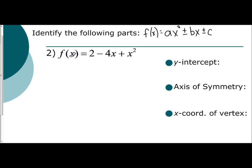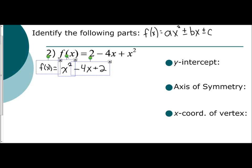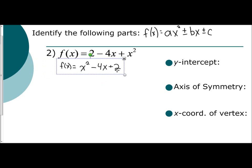The first thing I want to do is rewrite this in standard form. Remember, addition is commutative, so as long as we use the operations in front of the terms as their signs, we can move their positions. The quadratic term comes first: positive x². Next, the linear term: minus 4x. Then the constant: plus 2. This gives us f(x) = x² - 4x + 2, which lets us clearly see our a, b, and c values.